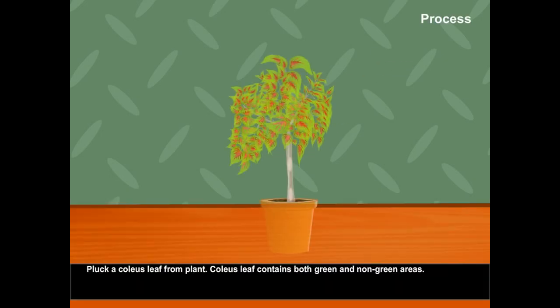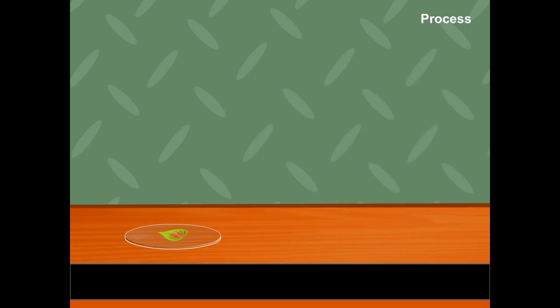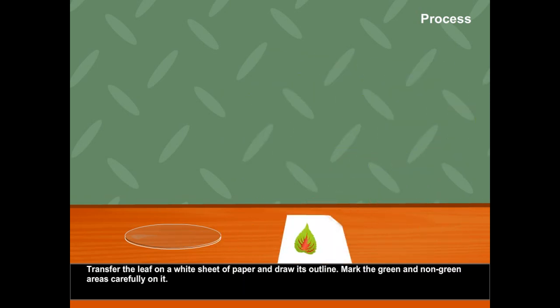Process: Pluck a coleus leaf from plant. Coleus leaf contains both green and non-green areas. Transfer the leaf on a white sheet of paper and draw its outline. Mark the green and non-green areas carefully on it.